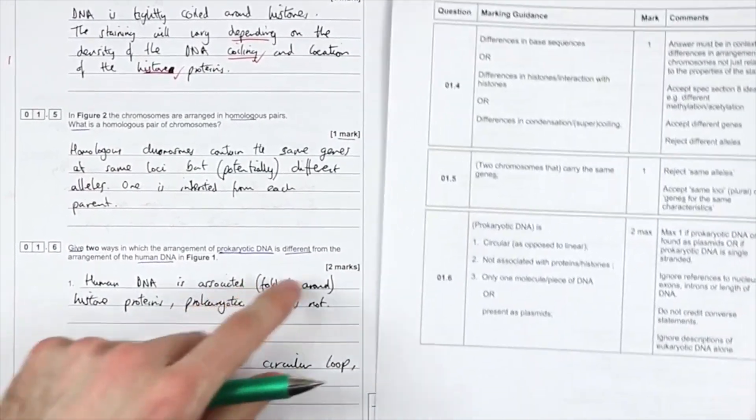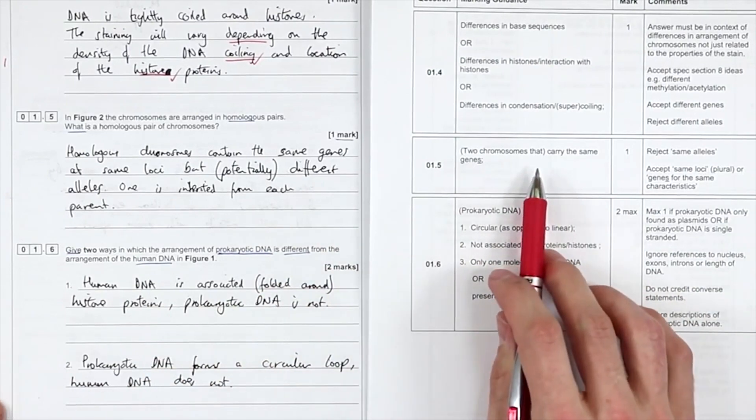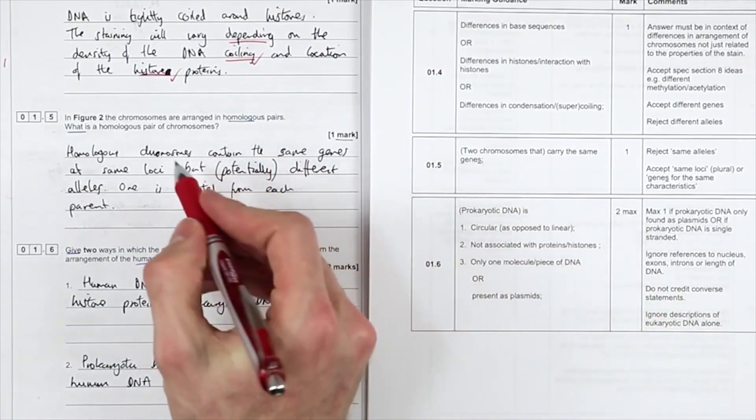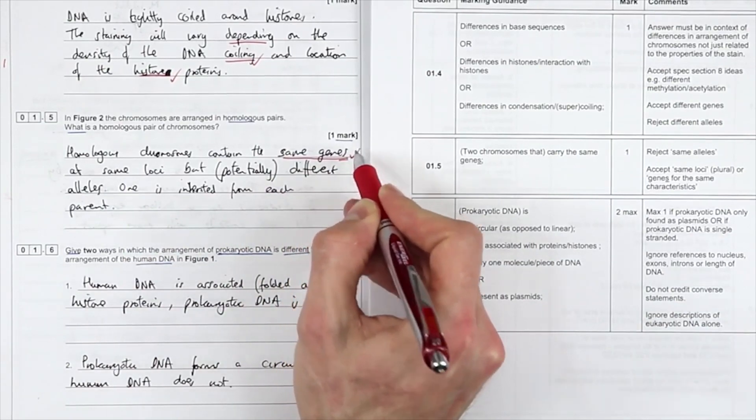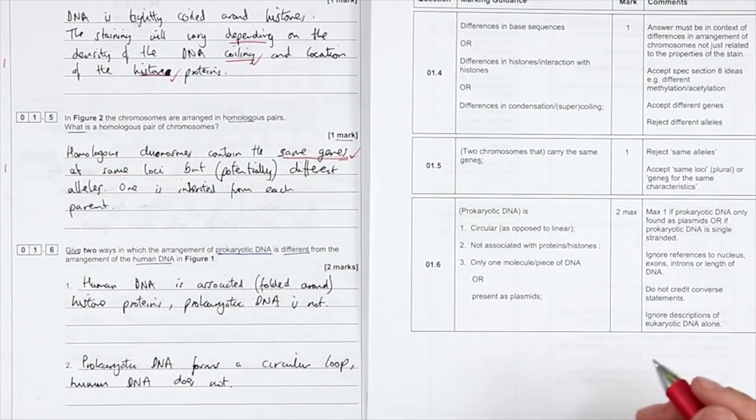Okay, so what is homology? There's two chromosomes that carry the same genes. Two chromosomes that contain the same genes, plural. For one mark.